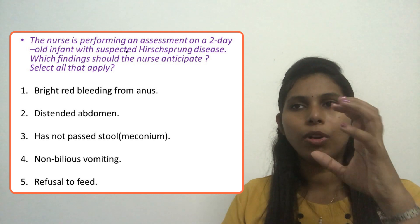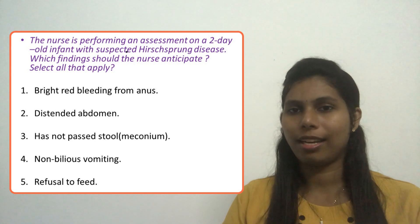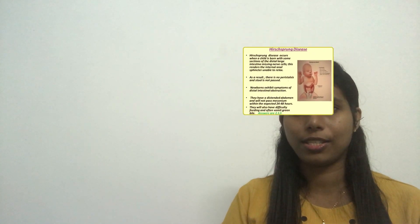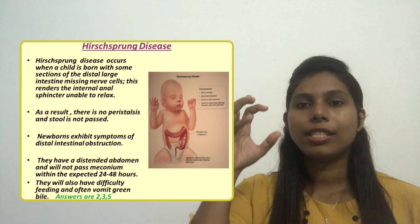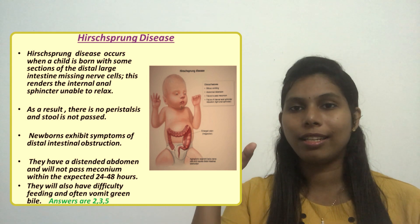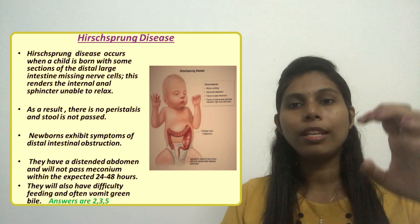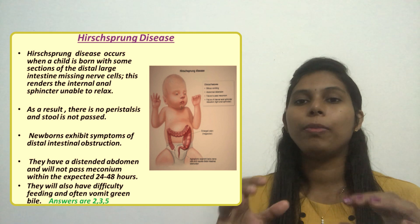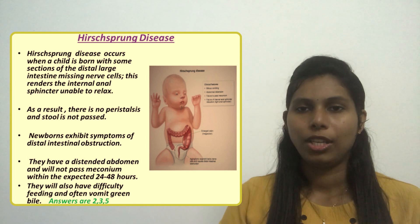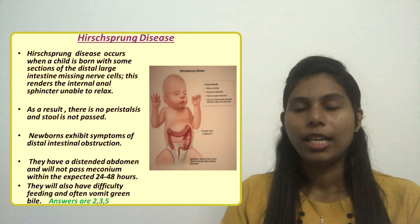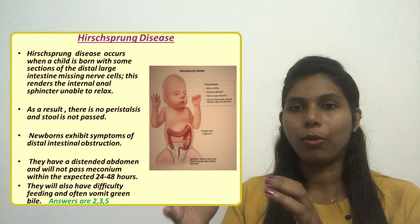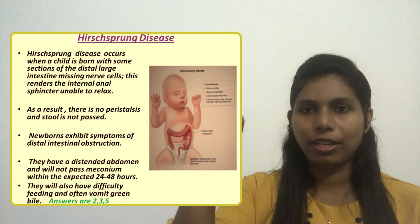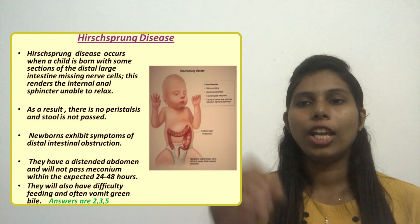It is very important to have an idea about Hirschsprung's disease to get the correct answers. What is Hirschsprung's disease? When a child is born and some section of the distal large intestine is missing nerve cells, the anal sphincter cannot relax and there will be no peristalsis, so stool will not pass. Normally, a child passes their first stool, called meconium, within the first 24 to 48 hours.